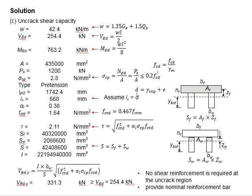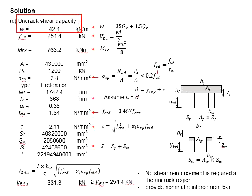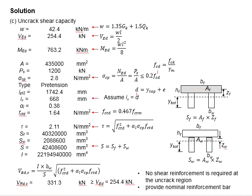The next step is to check the uncracked shear capacity, whether it is greater than VED. This normally refers to the regions near the support. If the uncracked shear capacity is greater than VED, no shear reinforcement is required in that region and you will only need to provide nominal reinforcement bars. If this value is less than VED, shear reinforcement bars must be provided. With that, we need to check VRDC for the uncracked shear capacity region.